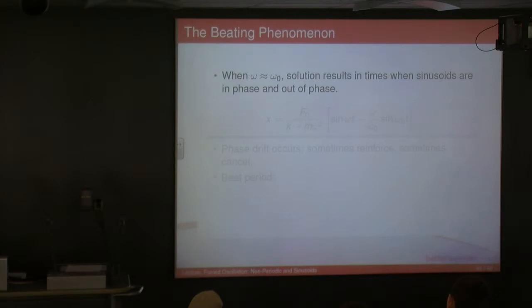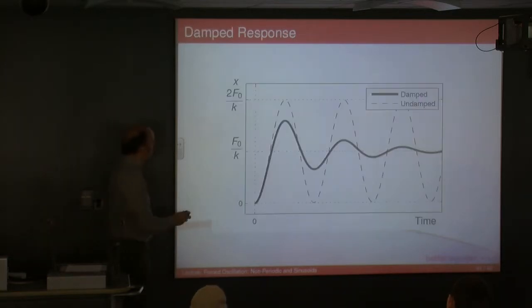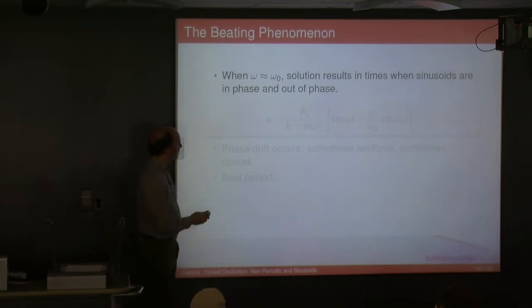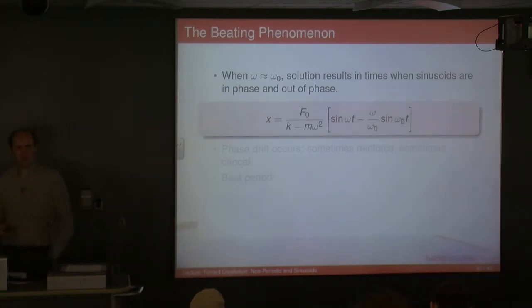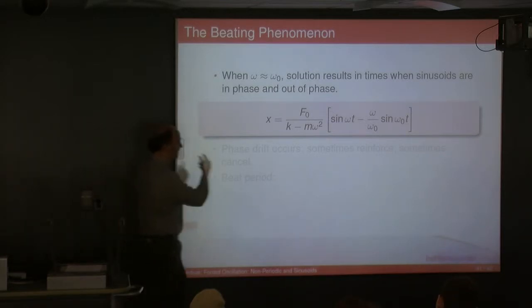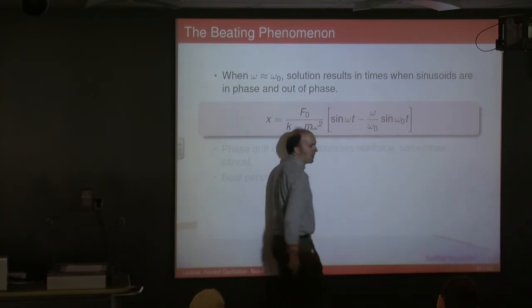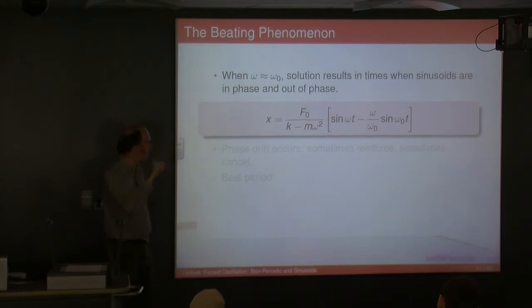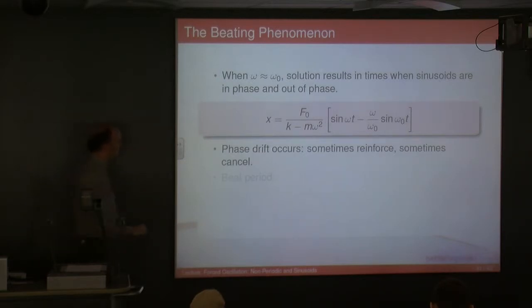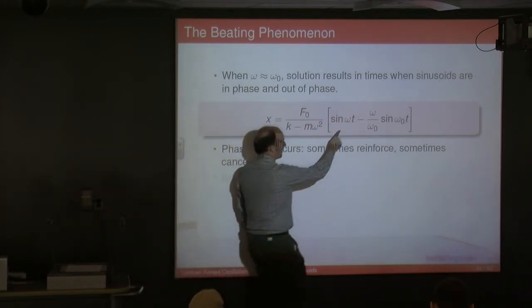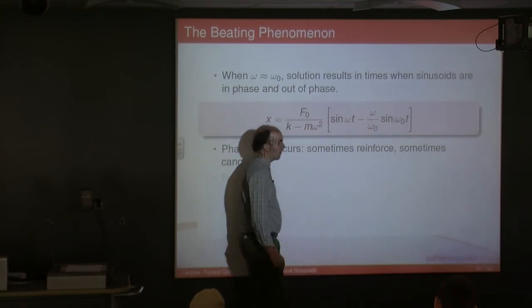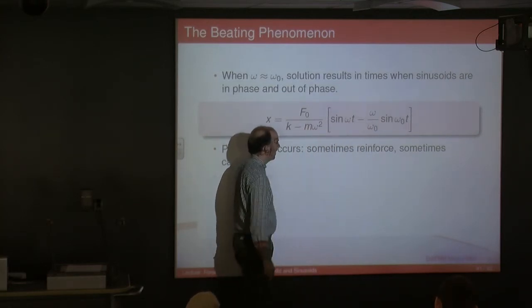Lastly, beating. Going back to the undamped case — here's our solution. What happens when omega approaches omega_naught? You have a sine omega t term and a sine omega_naught t term; they're almost the same frequency but slightly different, and you get what's called phase drift occurring.